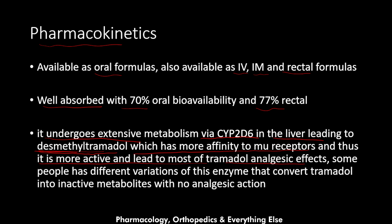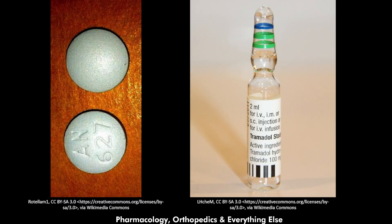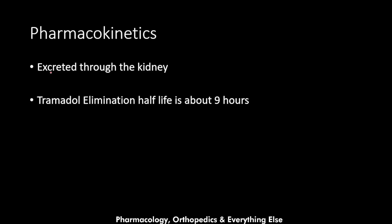The active metabolite desmethyl tramadol is responsible for most of the analgesic effects. Some people have different variations of the CYP2D6 enzyme that convert tramadol into inactive metabolites with no analgesic action, so the analgesic effect varies considerably from person to person. Tramadol is excreted through the kidney and has an elimination half-life of about nine hours.